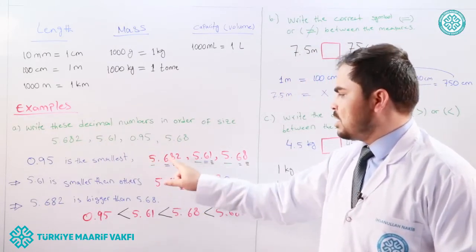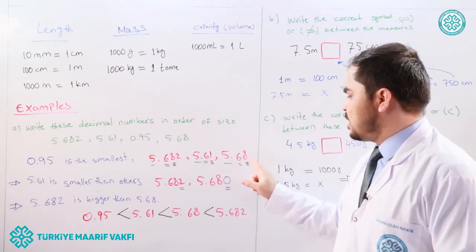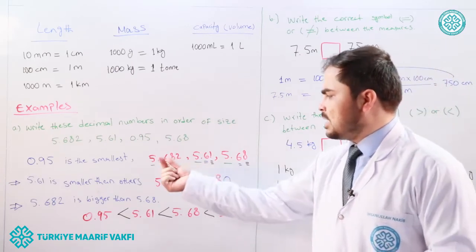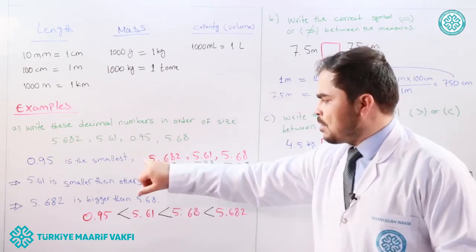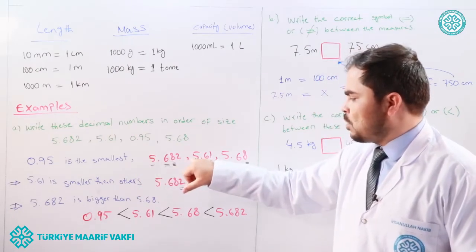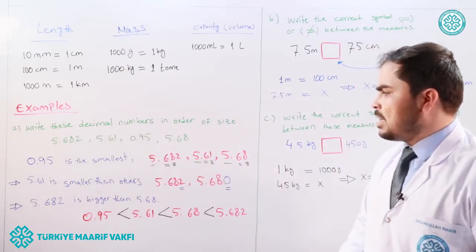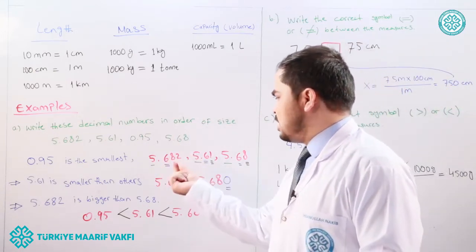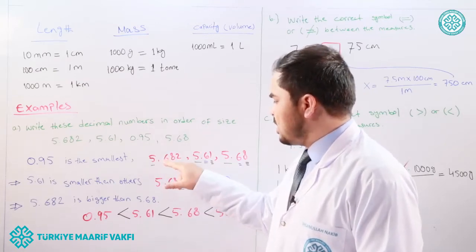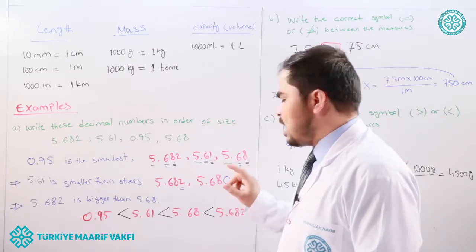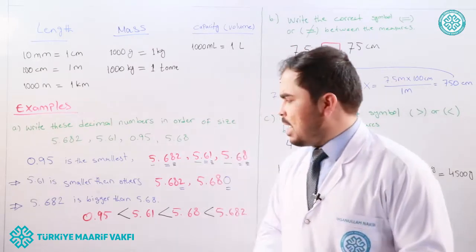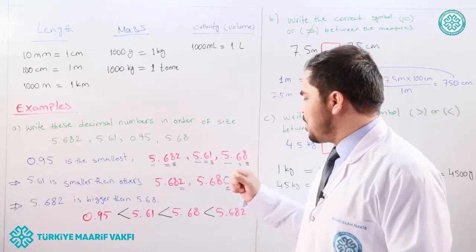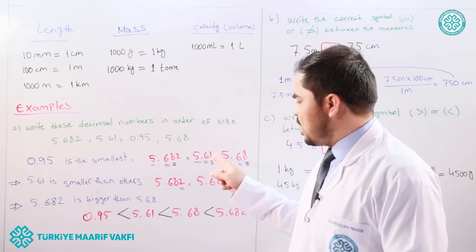With 0.95 identified as the smallest, the remaining three numbers are 5.682, 5.61, and 5.68. Their whole parts are all five — equal to each other — so we move to the first decimal digit, which is six in all three cases. Still equal, so we move to the next digit: eight, one, and eight.